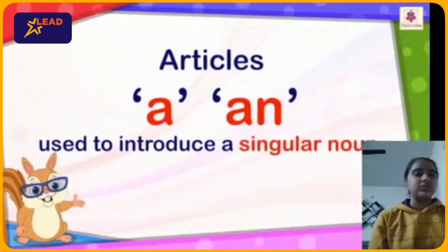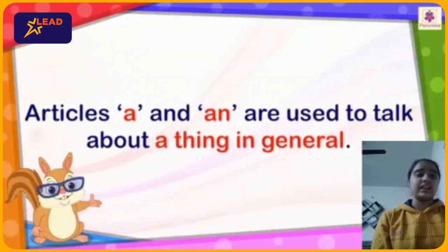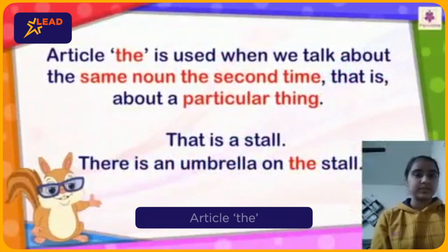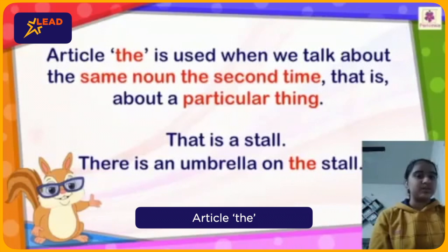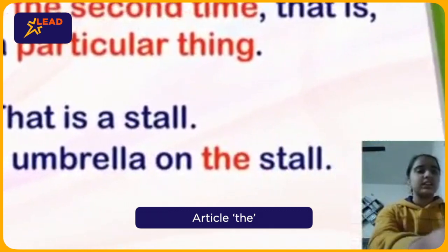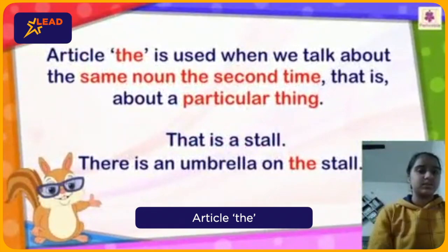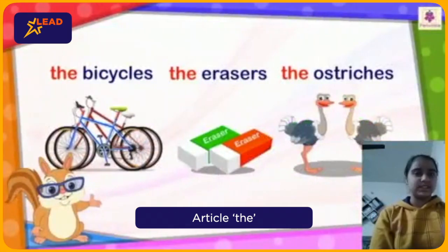Articles A and An are used to represent a singular noun. A and An are used to talk about a thing in general. Article The is used when we talk about the same noun the second time — that is, about a particular thing. For example: there is a stall; there is an umbrella on the stall — we use 'the stall' the second time. Article The is also used to introduce plural nouns — for example, the bicycles, the erasers in the old streets.